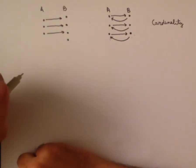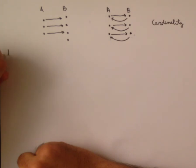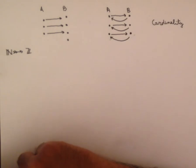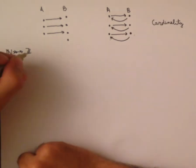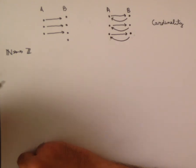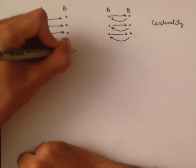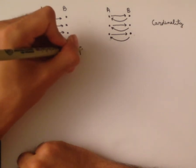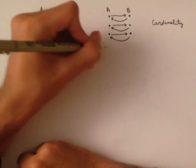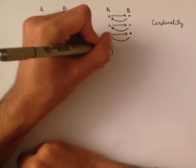Now we're going to look at some bijections between common infinite sets. The first one is going to be from the natural numbers to the integers. It might seem like there are more integers than there are natural numbers, because the integers are the positive and negative whole numbers, while the natural numbers are just the positive ones. But there is in fact a function, and that function is f(x) = ceiling(x/2) · (−1)^x.